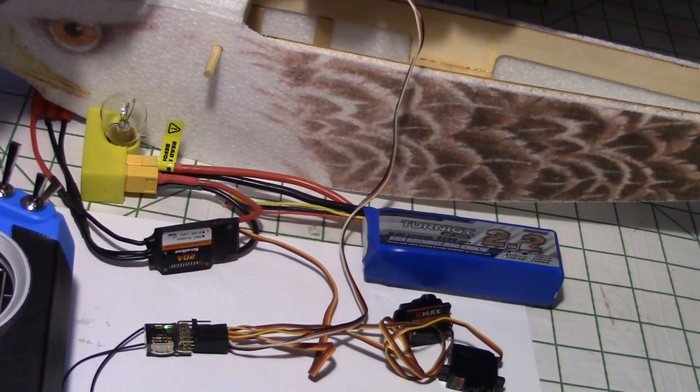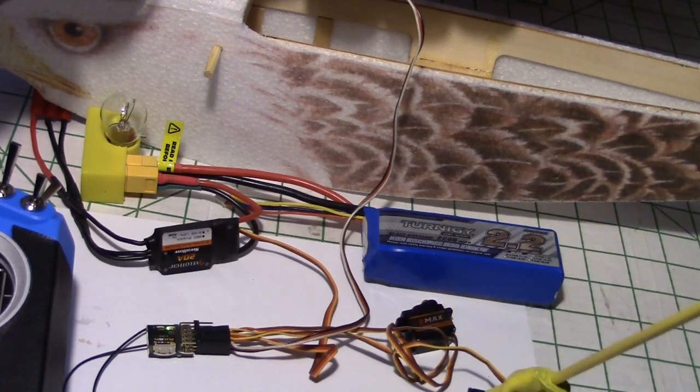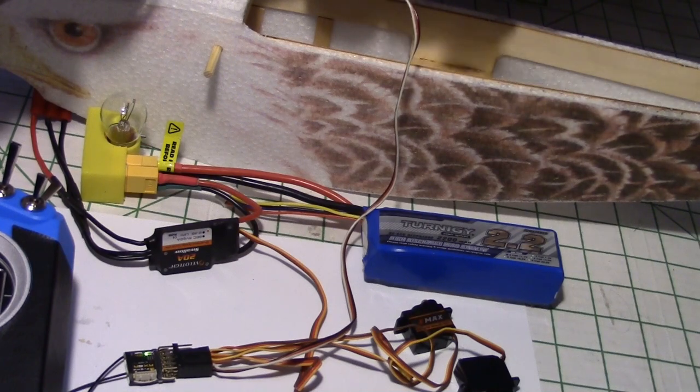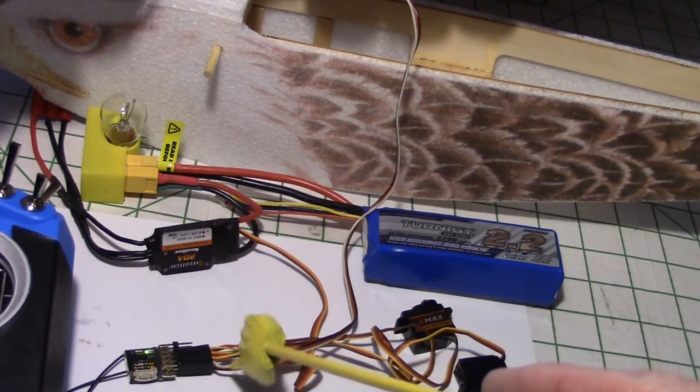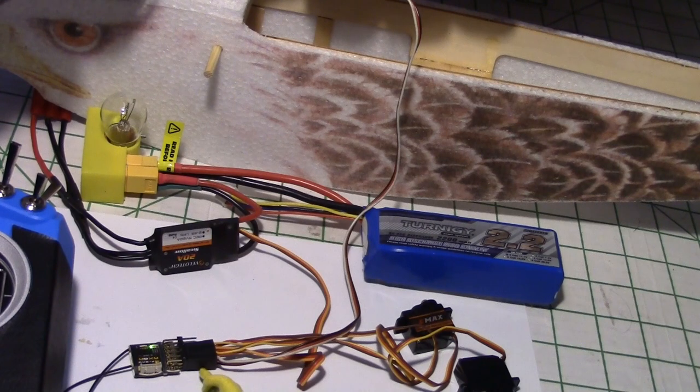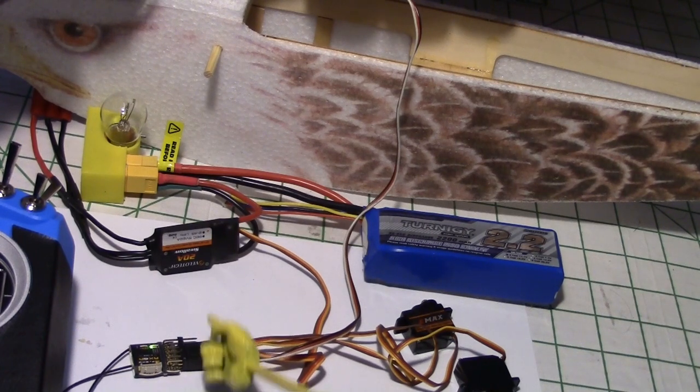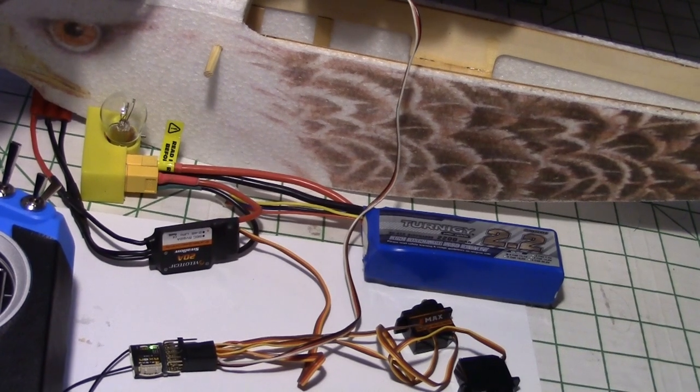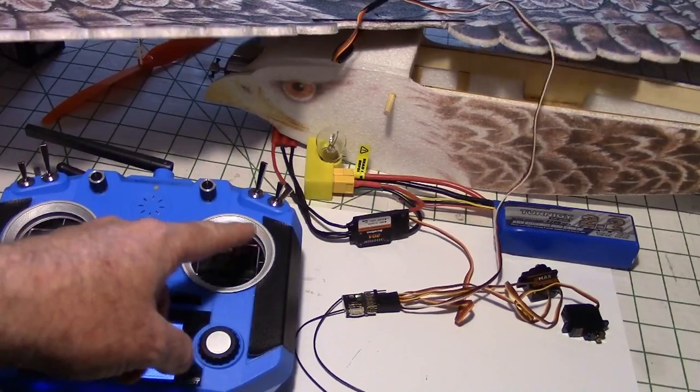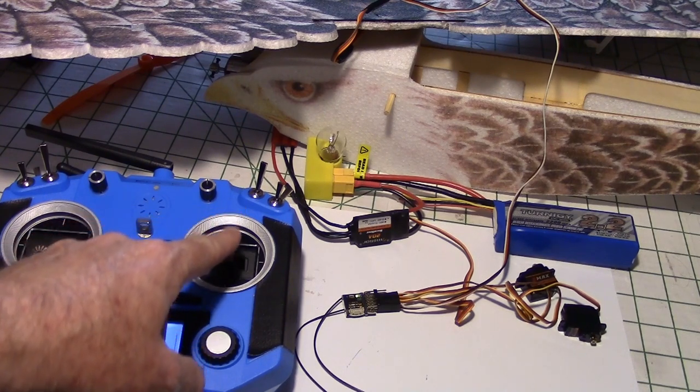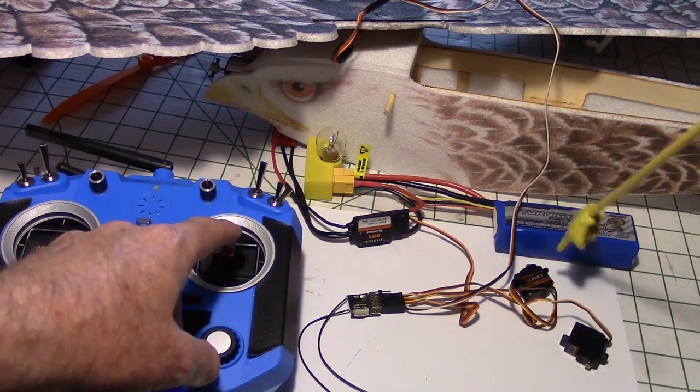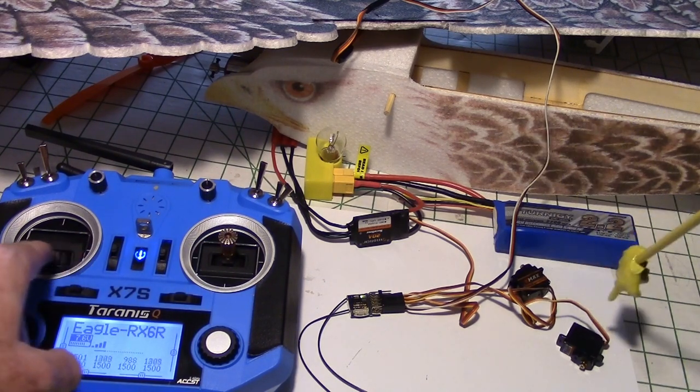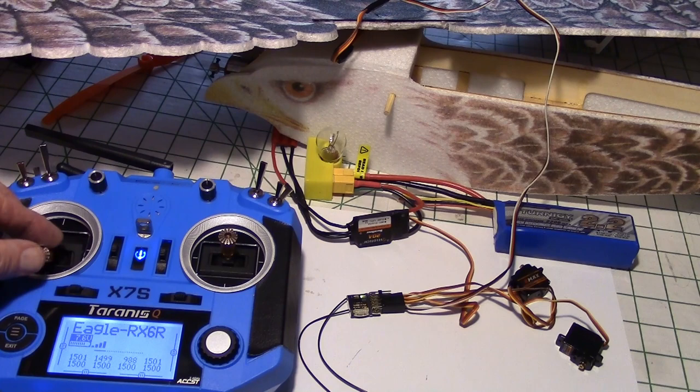Quick bench check. These are the tail servos here for the V-tail. And then I have this wire coming off going to the ailerons up here. So it's aileron, elevator, throttle, and rudder in that order. Let's zoom out. There's the ailerons. There's the elevator working the two V-tail servos. There's the rudder working the two V-tail servos. And of course the throttle.